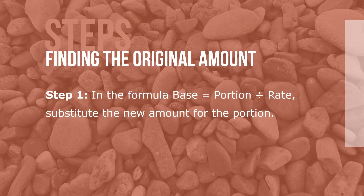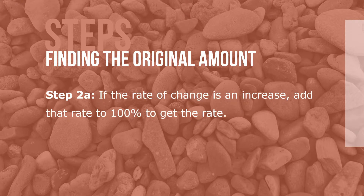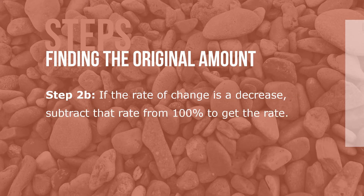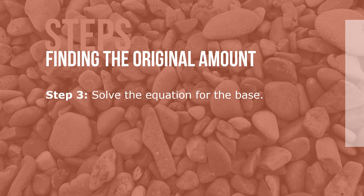Here are the steps for finding the original amount. Step 1: in the formula base equals portion divided by rate, substitute the new amount for the portion. Step 2a: if the rate of change is an increase, add the rate to 100% to get the rate. Step 2b: if the rate of change is a decrease, subtract that rate from 100% to get the rate. Step 3: solve the equation for the base.